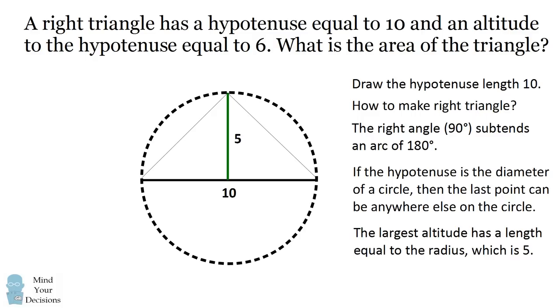So the correct answer to this problem is that there's a typo in the textbook. There is no right triangle that has a hypotenuse equal to 10 and an altitude to the hypotenuse equal to 6. At most, you can have an altitude equal to half of the hypotenuse, which would be 5. Did you figure it out?